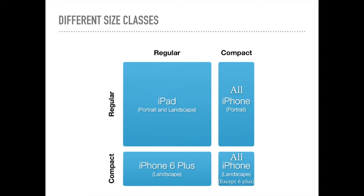The second case is compact compact, shown on the bottom right. The height is compact and the width is also compact. This is the case of landscape orientation where all iPhones are included except the plus classes like 6 Plus, 6s Plus, and 7 Plus.